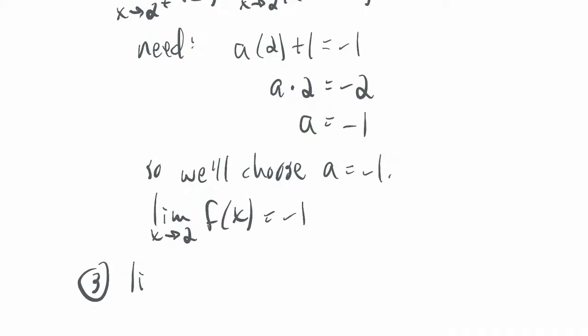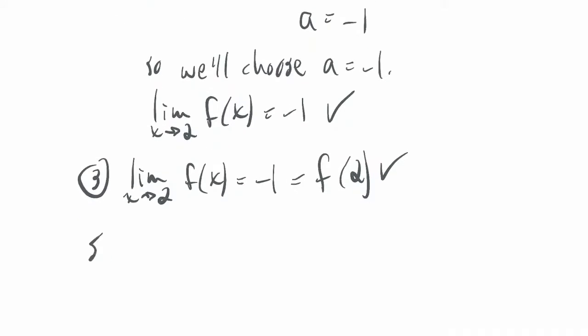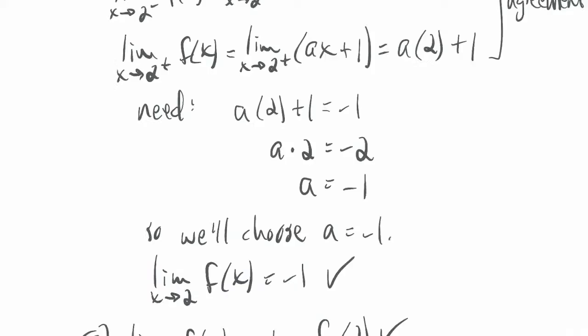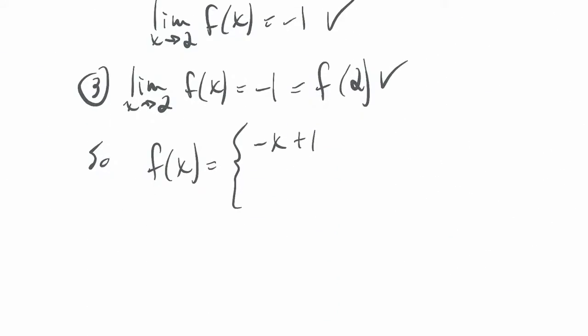So now I can move on to step 3. Limit as x goes to 2 of f of x equals negative 1, which equals f of 2. So we get all three points are met. And we get continuity. So f of x equals negative x plus 1 when x is greater than 2, and 3 minus x squared when x is less than or equal to 2, is continuous. And again, this is a concept that we'll use again later as well.